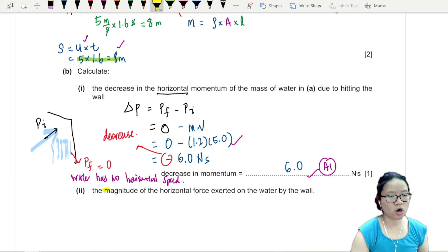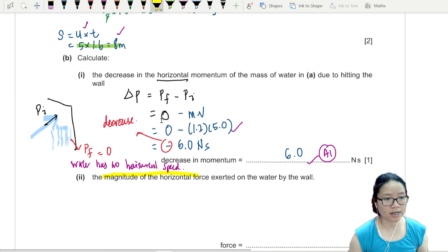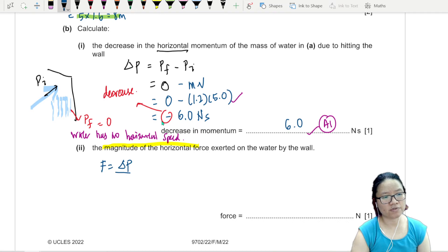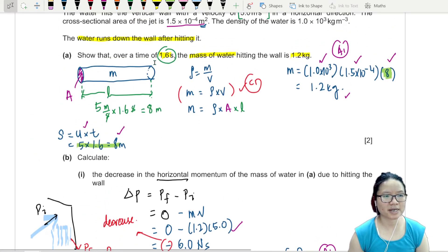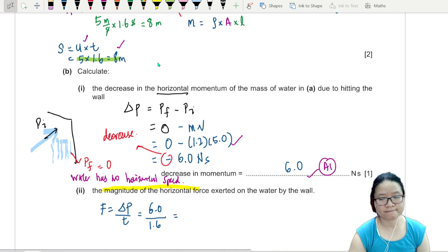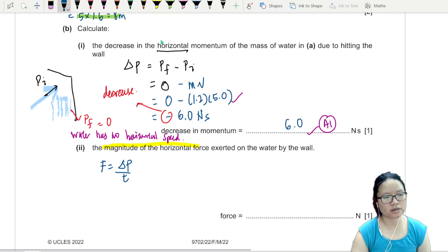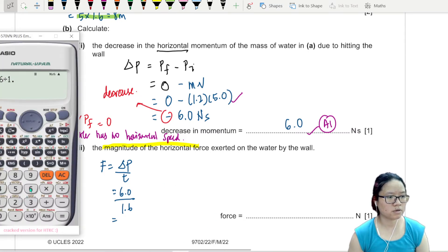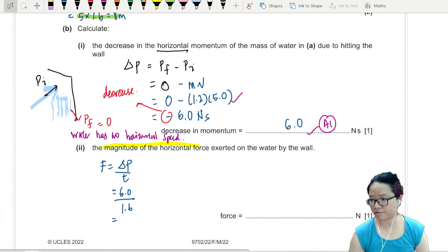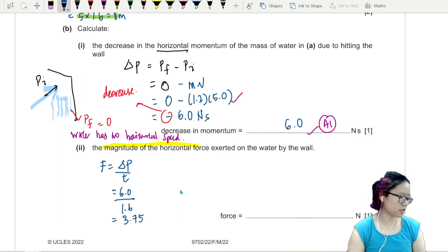So the water has a decrease in momentum of 6 newton second. All the water momentum is gone away. It has no momentum after it hits the wall. So now we can calculate the magnitude of the horizontal force. Think of your newton second law. Force is change in momentum over time. And your change in momentum is 6.0. So decrease by 6.0. How long did it take 1.2 kg to hit the wall? 1.6 seconds. So we're going to put 1.6 here. 6.0 over 1.6 and this one would be 3.75, 3.8 newton. Nice and easy.